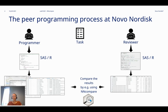The reviewer creates a peer program that reviews or validates the programmer's work, and to avoid being influenced by the programmer's code, the reviewer should not read it until after the preparation of the peer program. The peer program typically produces a data frame that should then be compared with the data frame from the primary program, and for that you can use the nnCompare package.